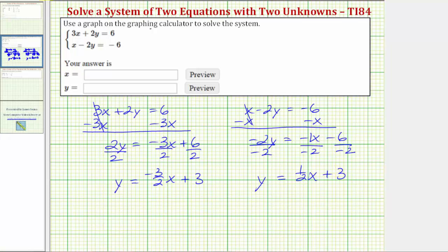Now that we have both equations in slope-intercept form, which is the form y = mx + b, we can graph these lines on the graphing calculator. Before we do, for review, remember m is the slope and b is the vertical intercept or y-intercept.